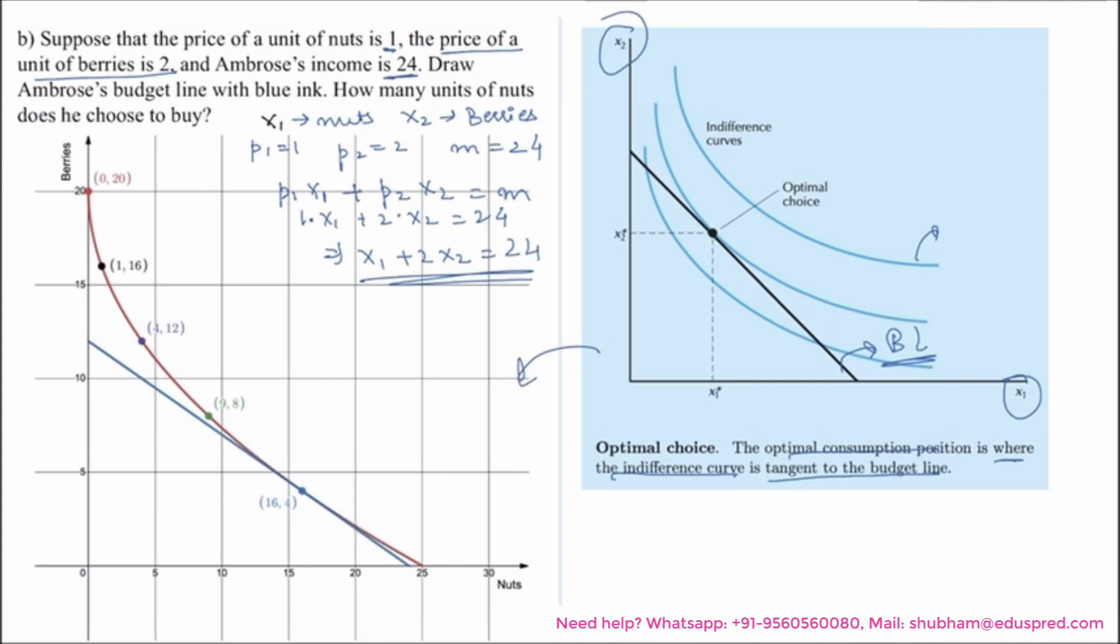Here, your blue budget line is tangent to the indifference curve at the consumption bundle 16, 4. So this would be his optimal consumption bundle.